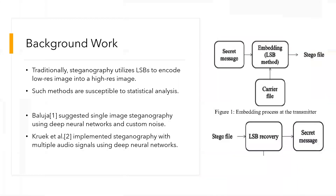Traditionally, steganography utilizes the least significant bit to add the secret image to the cover image. This introduces susceptibility, via which many statistical analyses can be done to retrieve the secret images easily, which is a flaw. Therefore, we introduce deep learning as a technique where we can add noise to the concatenated secret and cover images.